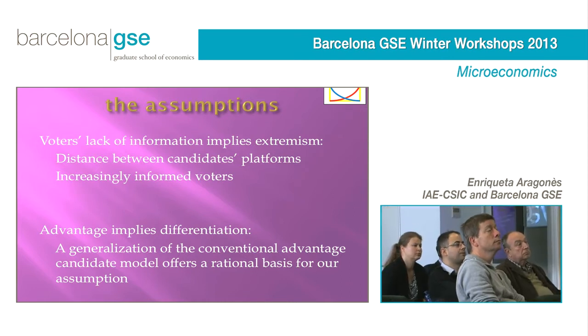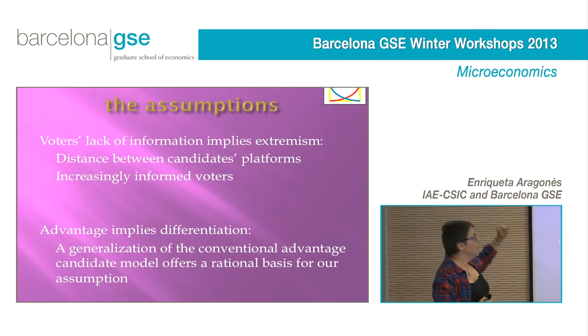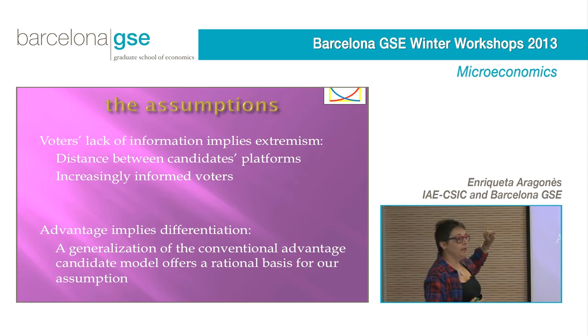We relax the information assumption by giving more information to voters in two different ways. If we give voters information about the distance between the two policy platforms chosen by the parties, nothing changes. But by increasing the proportion of informed voters — or equivalently, the probability that the median voter is fully informed — the extremism decreases and we converge to the standard Hotelling model.